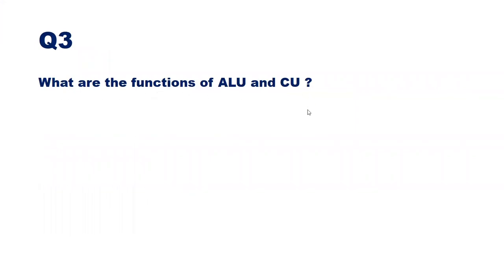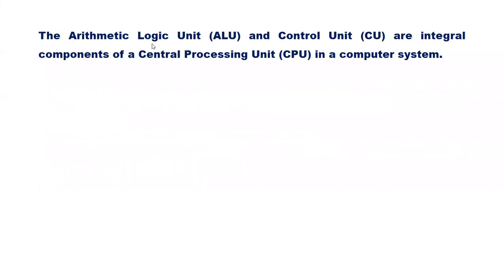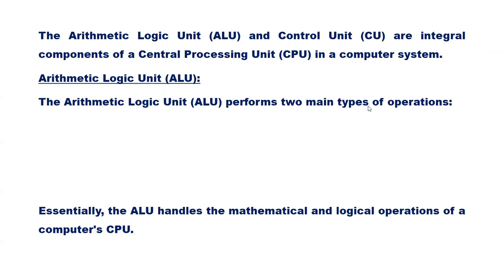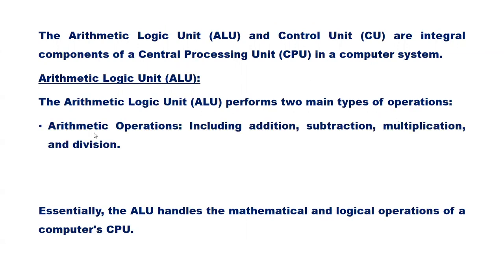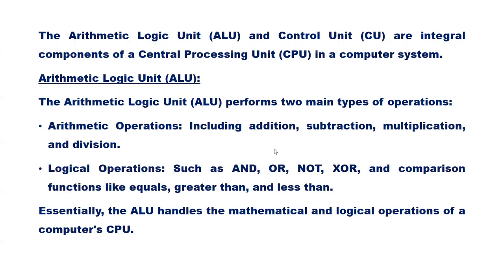Question 3: What are the functions of ALU and CU? The arithmetic logic unit and the control unit are integral components of the CPU. The ALU performs two main types of operations: arithmetic operations including addition, subtraction, multiplication, and division; and logical operations such as AND, OR, NOT, EXOR, and comparison functions like equal, greater than, and less than. Essentially, the ALU handles all mathematical and logical operations of a computer's CPU.